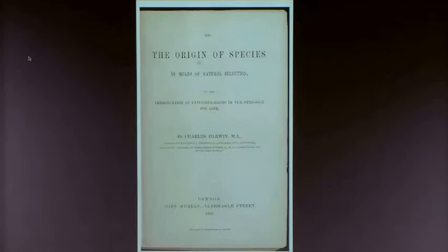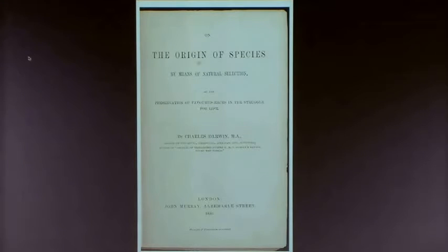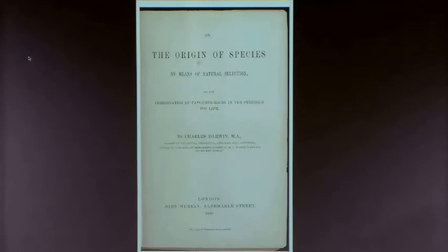When it was published in 1859, this book created a scientific revolution on a par with the Copernican revolution of astronomy or the germ theory of disease. It had a profound effect on thinking in the latter part of the 19th century. It was very controversial and to some extent still is. Nevertheless, even people who argue vigorously about it aren't entirely clear sometimes on what Darwin's theory of evolution actually is.